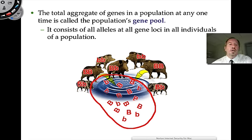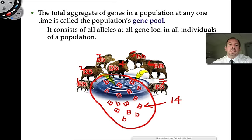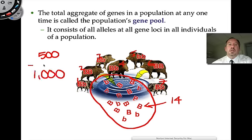If there are seven members of the population, you would expect there to be 14 alleles — not necessarily 14 different ones. Each organism has two to contribute. So if I said I'm studying a population of 500 trees, there are actually going to be 1,000 alleles in the gene pool, because it's always double since organisms are diploid.